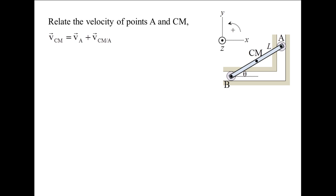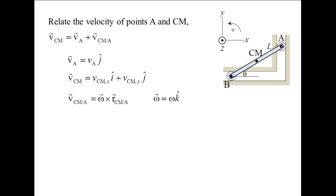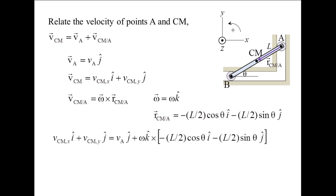We can obtain the velocity of the center of mass by relating the velocity of that point to the velocity of point A. The velocity of the center of mass is equal to the velocity of point A plus the velocity of the center of mass relative to point A. Point A moves in the y-direction at negative 2 meters per second. The center of mass velocity is decomposed into its components. The relative velocity is omega cross RCMA, the position vector pointing from point A toward the center of mass. RCMA starts at point A and terminates at the center of mass. The center of mass is located at a distance one-half L times cosine theta to the left and one-half L times sine theta downward from point A.